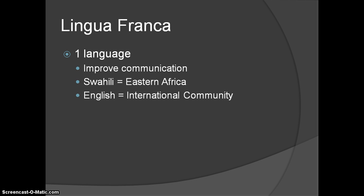One example is Swahili in Eastern Africa — a historical lingua franca. It was important for East African trading states, especially as they traded across to the Arabian Peninsula, which was an important trading hub for Asia and Europe. Swahili was also a pidgin language historically, but it was used in Eastern Africa as a trading language.